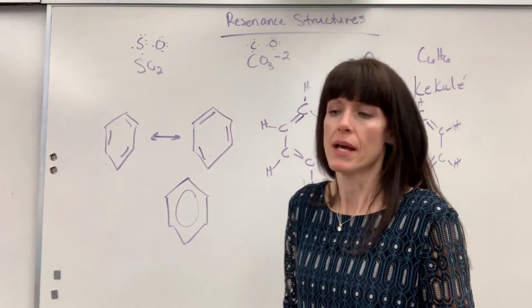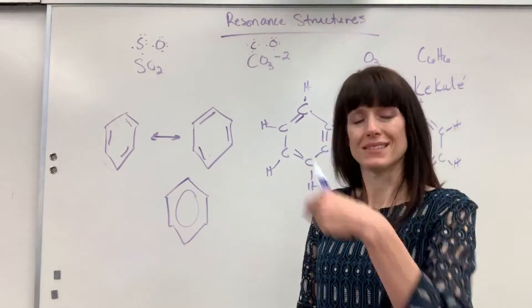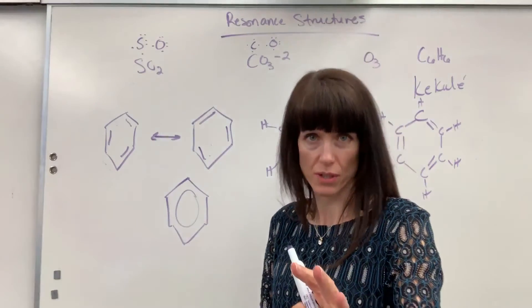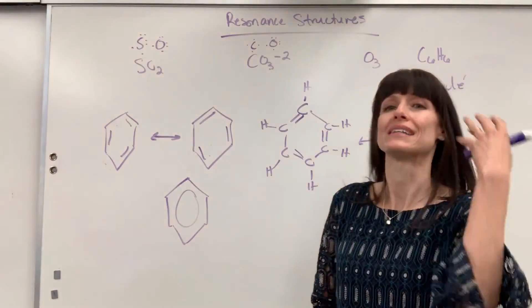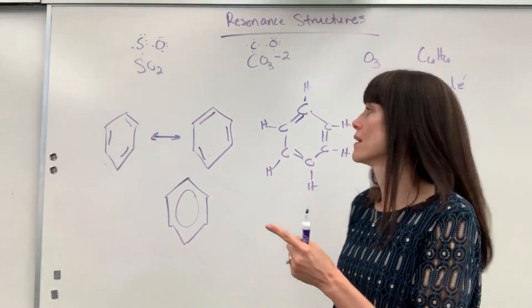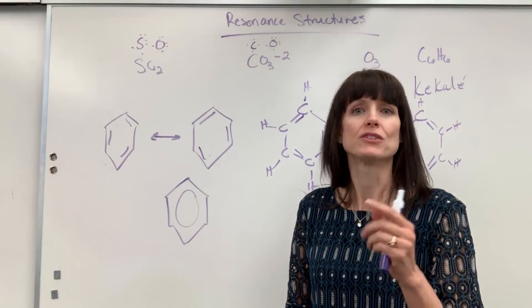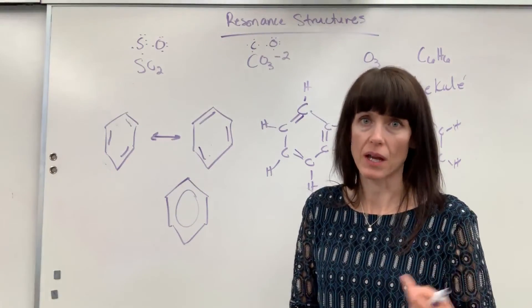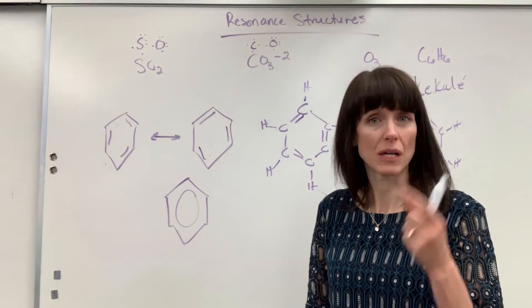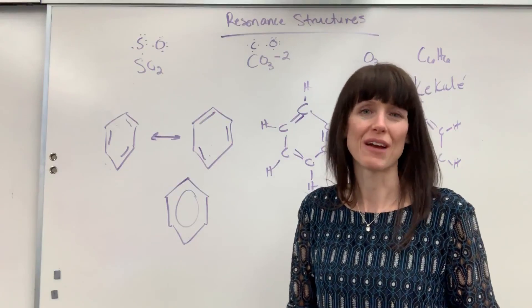So resonance structures: the central atom has identical substituents around it but different bonds — single, double, even triple. You have to write every possibility of how that structure could exist and put double-headed arrows between them. That's resonance structures. Good job, and have a wonderful day.